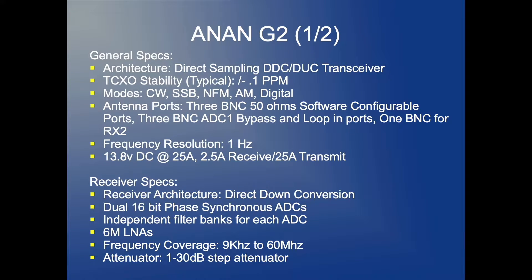The standard supported modes are CW, SSB, and others. There are plenty of antenna ports on this hardware, and the frequency resolution is 1 hertz. Power is 13.8 volts DC at 25 amps, like any ham radio. The current draw is 2.5 amps on receive and 25 amps on transmit.